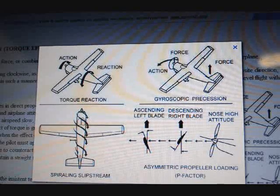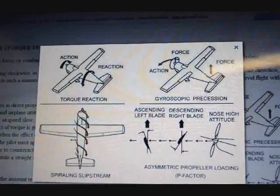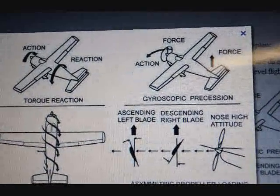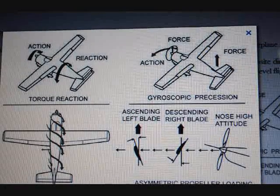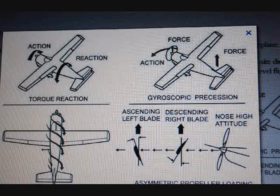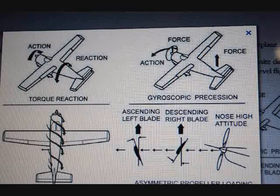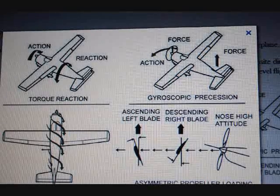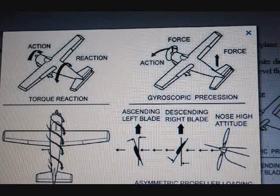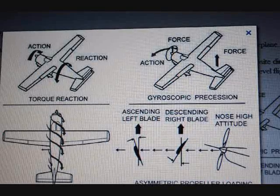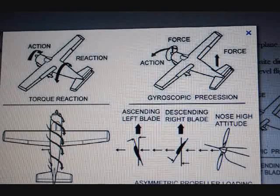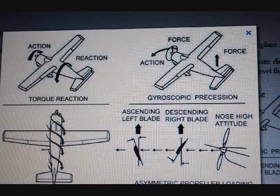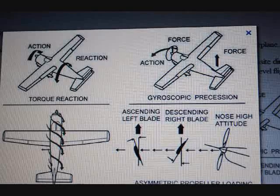The asymmetric prop, or P-factor. Training aircraft are typically at a positive angle of attack when flying straight and level, but it's much more pronounced when you're taking off. The descending blade takes a larger chunk of air than the rising or ascending blade on the left side of the prop. So you get a little bit more thrust coming off the right side of the propeller than the left side, and that P-factor causes a left-turning tendency.